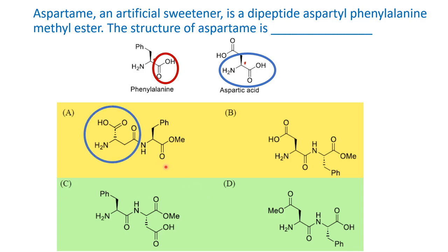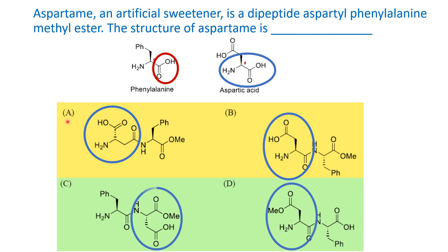Now let us identify the respective amino acids in the given options. Looking at the aspartic acid residues in all options — it should be an alpha aspartic acid, i.e., an alpha amino acid. In options C and D, the aspartic acid is given as the second amino acid. But by nomenclature, aspartyl is the N-terminal acid, not the C-terminal. So option C is ruled out.